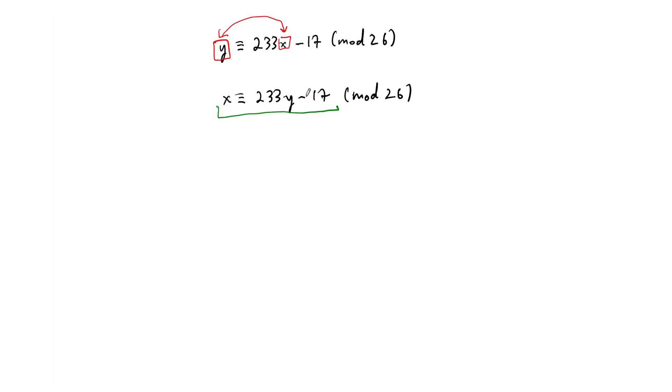So let's just start with the easiest thing. We need to add 17 to both sides. So here we get, this is going to say x plus 17 is congruent to 233y, the whole thing, mod 26.